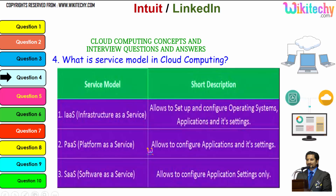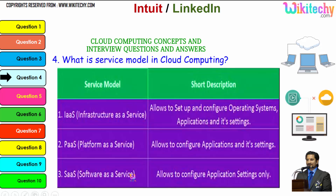Platform as a Service: you are allocated a specified operating system and you can install any applications and configure settings. Software as a Service: you are given software and you can configure whatever application settings you want. That's how the cloud service models work.